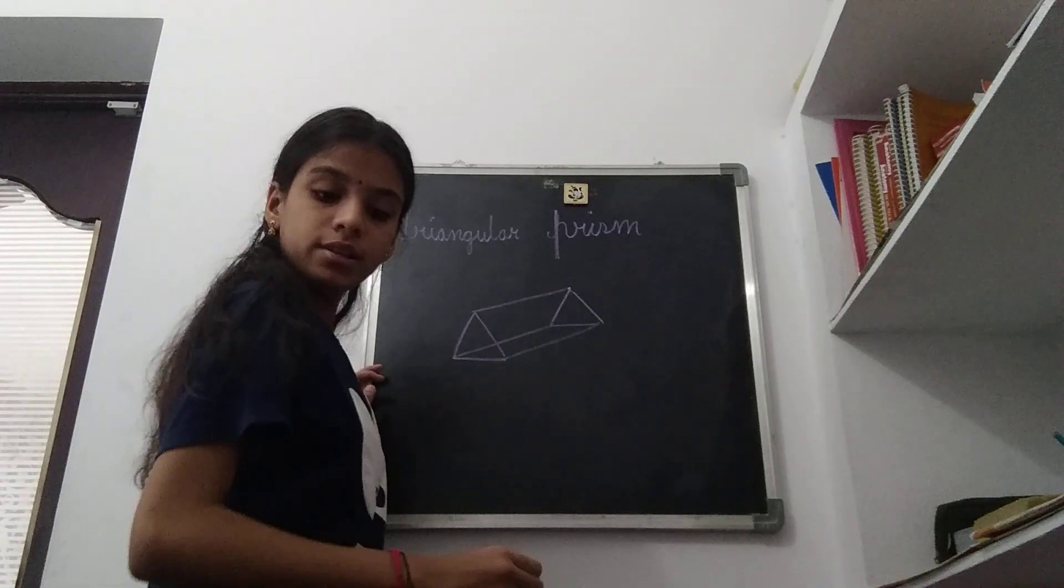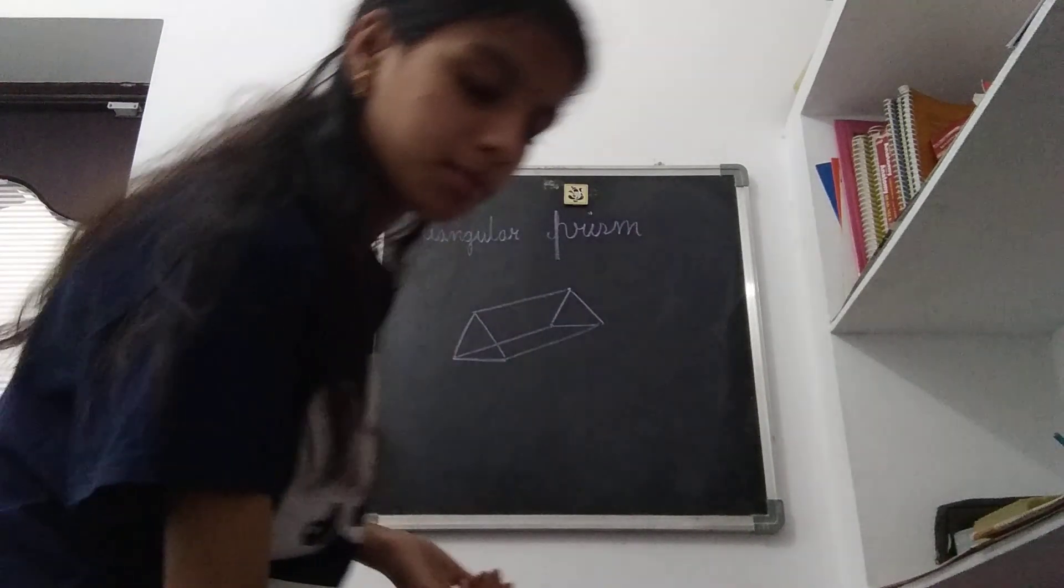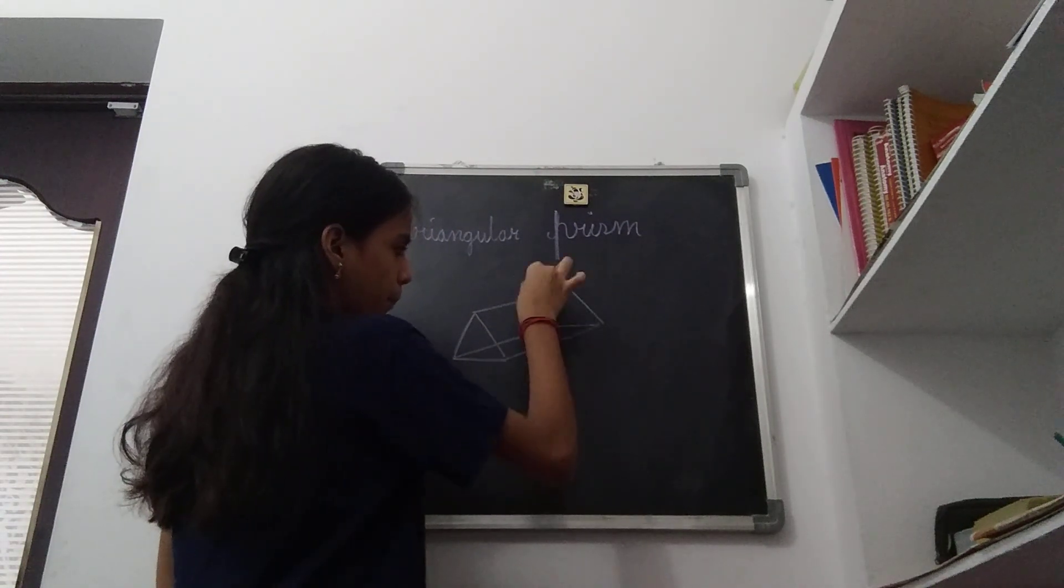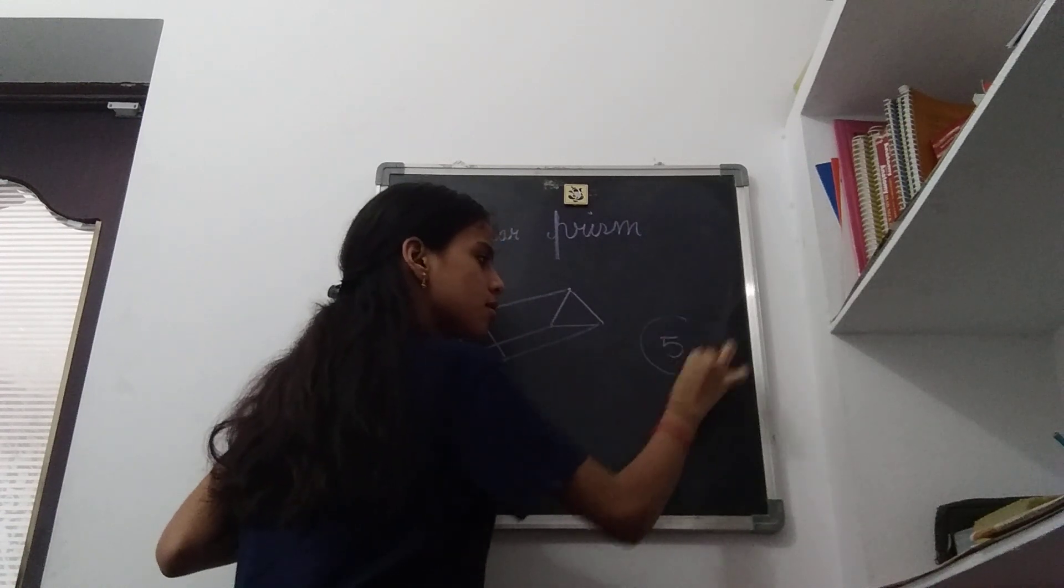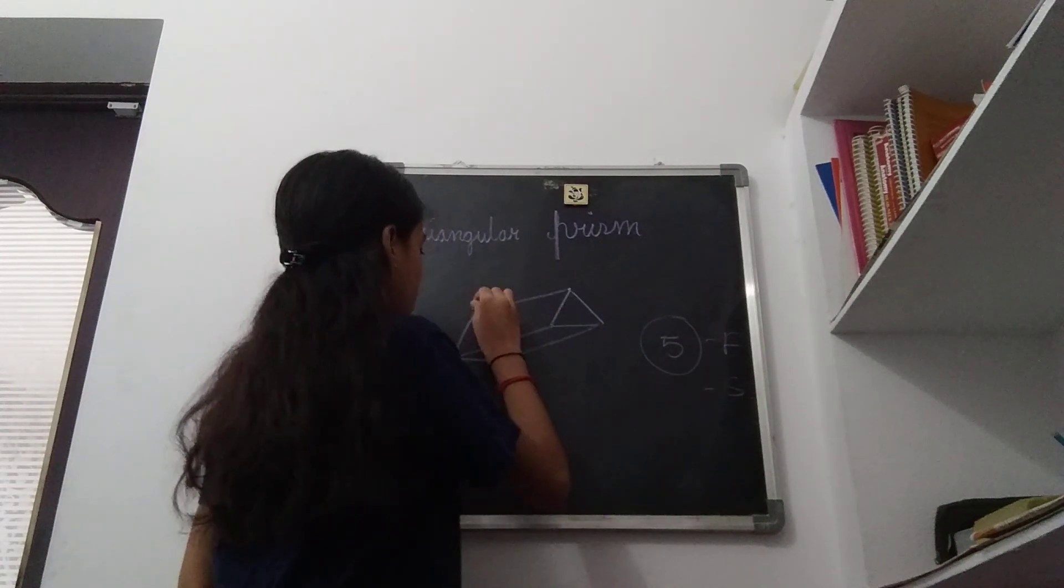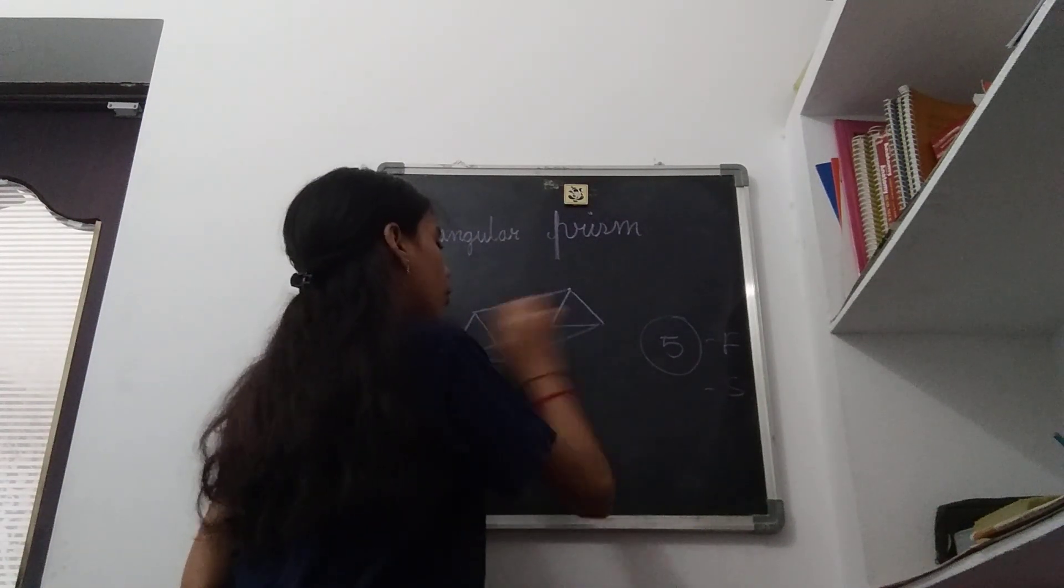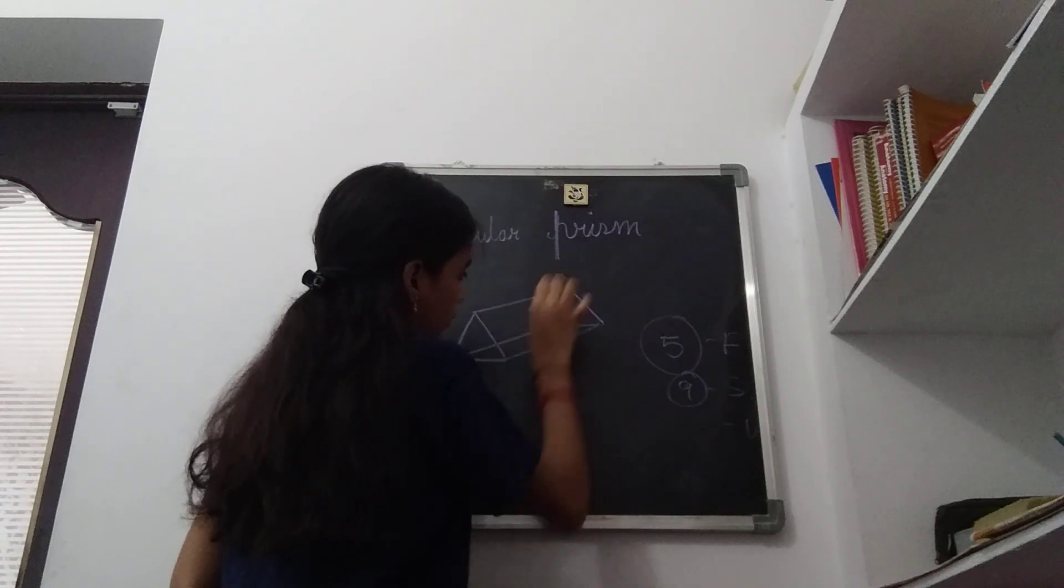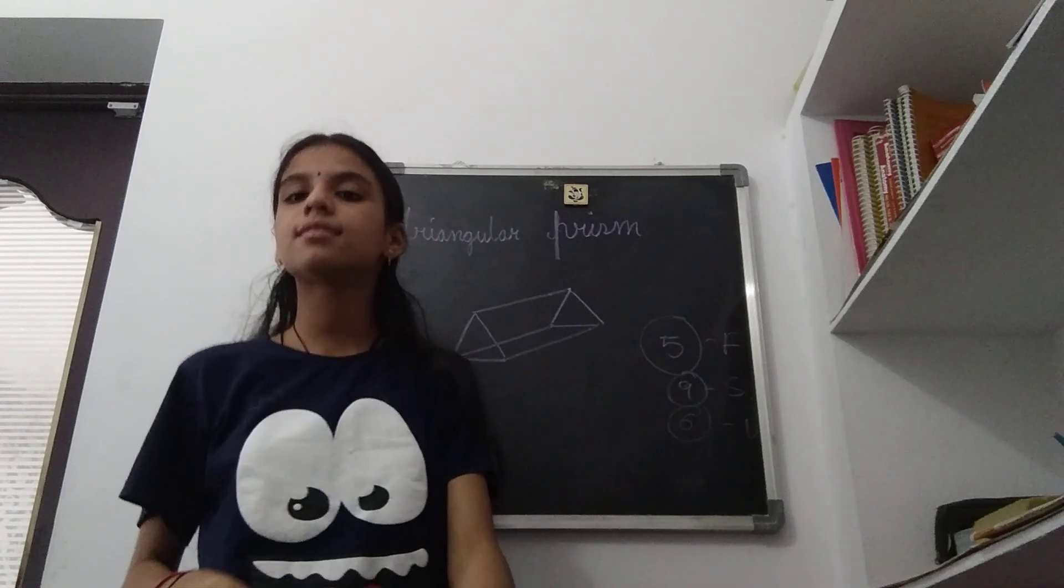Triangular prism has five faces - one, two, three, four, five faces. And edges - one, two, three, four, five, six, seven, eight, nine edges. And six vertices.